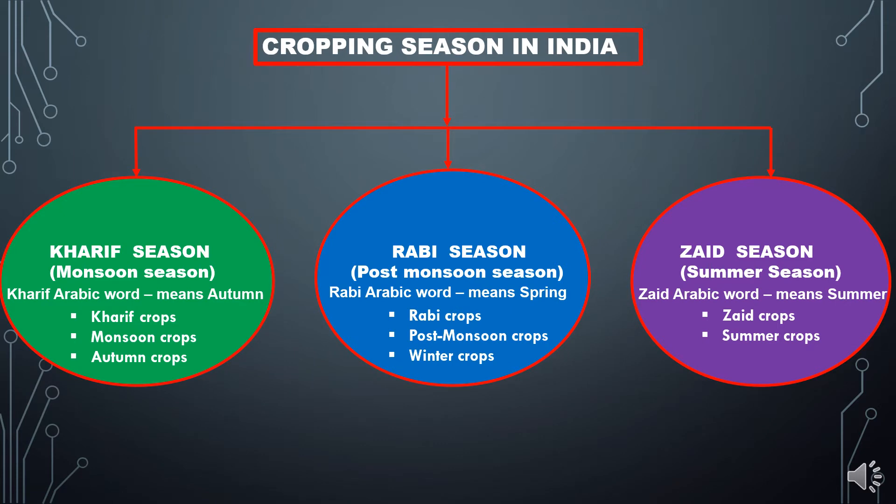There are mainly three cropping seasons in India. The first one is Kharif season, the second is Rabi season, and the third is Zaid season.